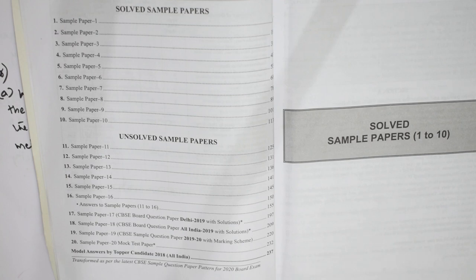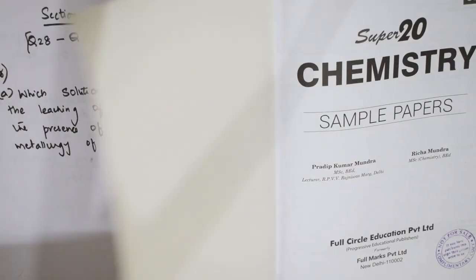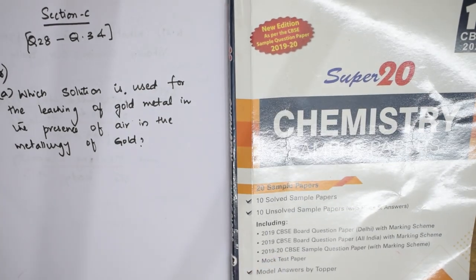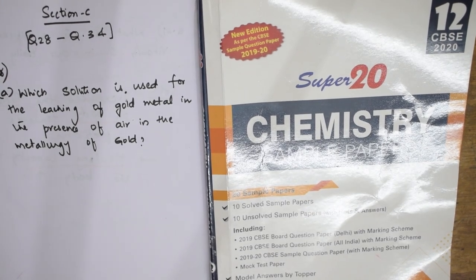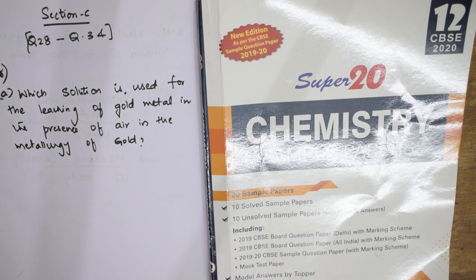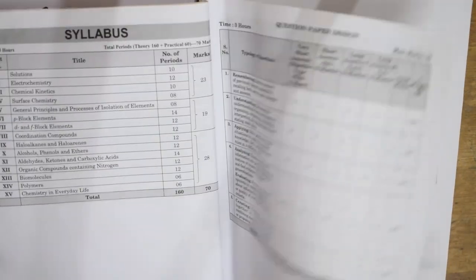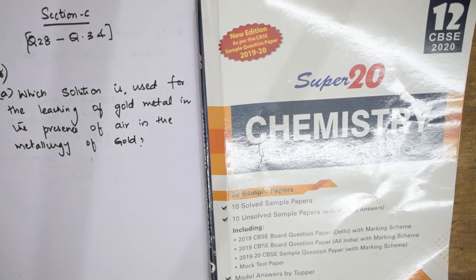Let us start off with Section C and Section D of the sample paper released by the Super 20 series. Section C contains question numbers 28 to 34 — these are all three-mark questions. Whenever a question is given to you, the first thing you need to remember is which section it belongs to.